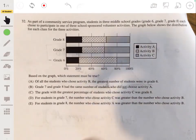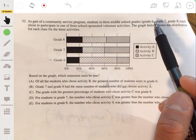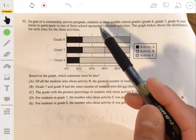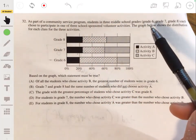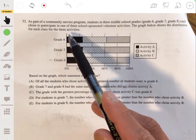All right, problem 32. We got that as part of a community service program, students in three middle school grades - six, seven, and eight - each chose to participate in one of three school-sponsored volunteer activities. The graph below shows the distribution for each class for the three activities.